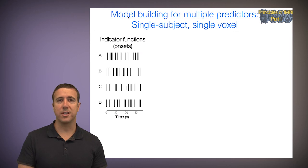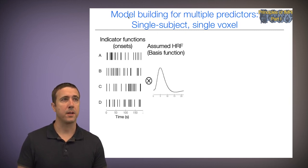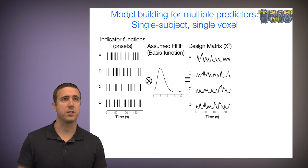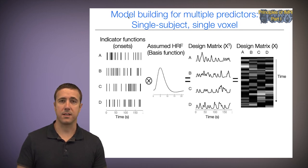If we go from two conditions of interest to more than two conditions, we can specify any number of different event types or block types. Here we've got four: A, B, C, and D. We can convolve each of them with an assumed basis function and end up with a design matrix.